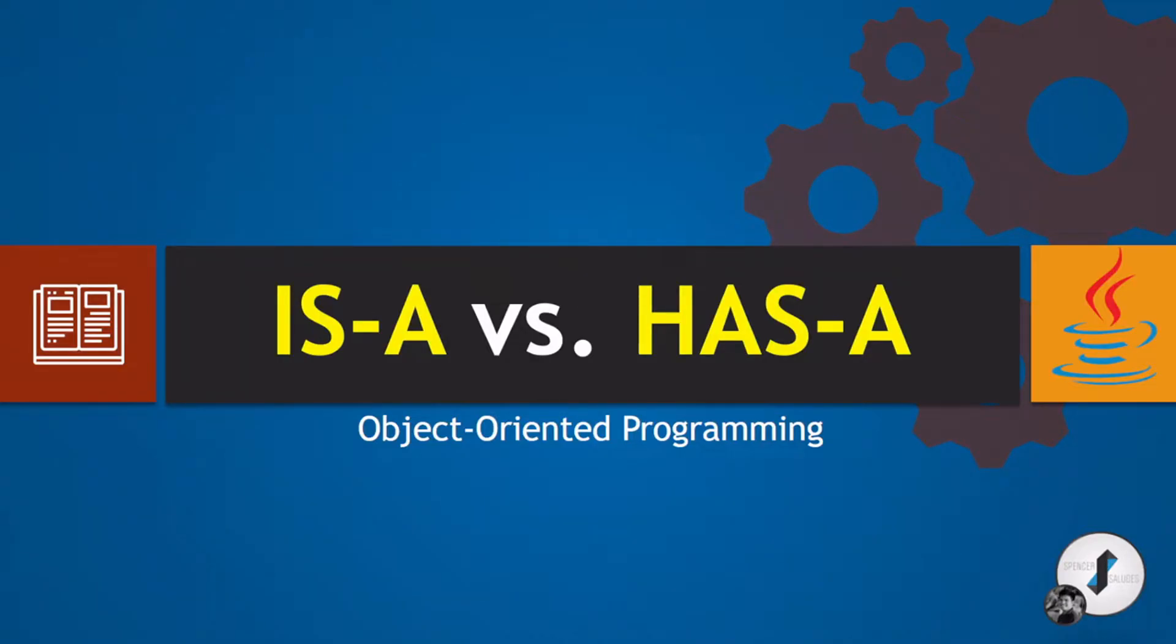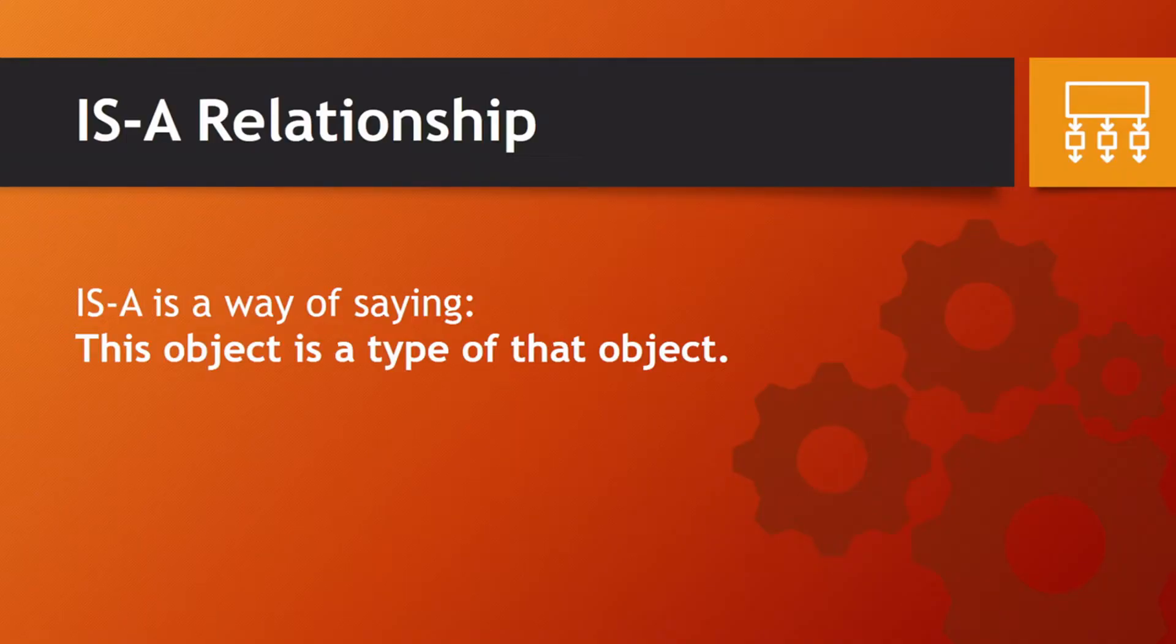Hi, in this video we will define and differentiate IS-A and HAS-A relationship in inheritance concept. To start, IS-A relationship is a way of saying this object is a type of that object. So for example, we have one object.